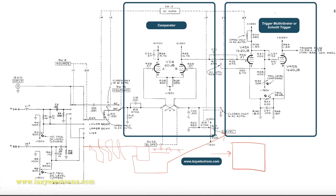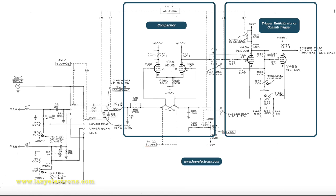Now let's get into the details. Starting from the trigger input switch — this selects the source for the trigger. That voltage is coupled into the comparator tube, which is a 6DJ8 containing two triodes. The signal goes to the left triode, and the trigger level is a fixed bias going into the right-side triode, with a common cathode tail. The output is taken from the right-side triode's plate.